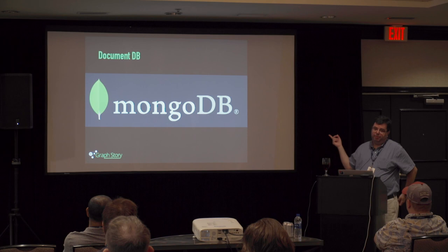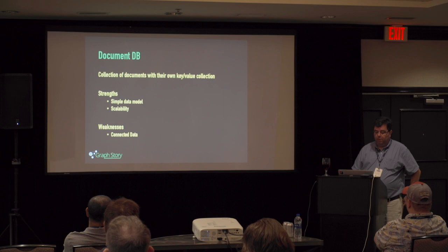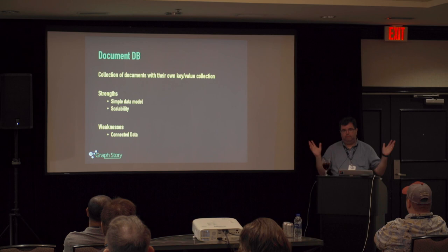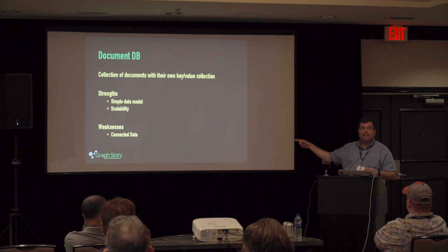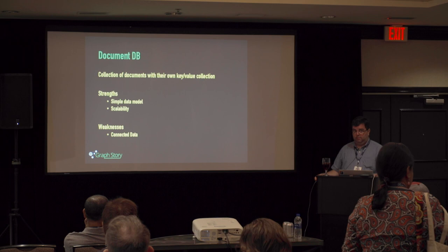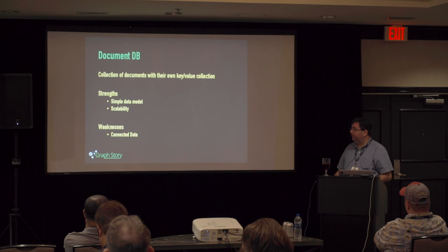The most popular NoSQL database is a document database called MongoDB. It's a collection of documents with their own key-value collection — simple data model, great at scaling. Mongo had a problem at some point where it might lose your data, but they figured that out. The challenge is connected data: when you want to associate those documents, you have to dump that logic into your code, and now your code represents the schema — that can be problematic if you need flexibility.